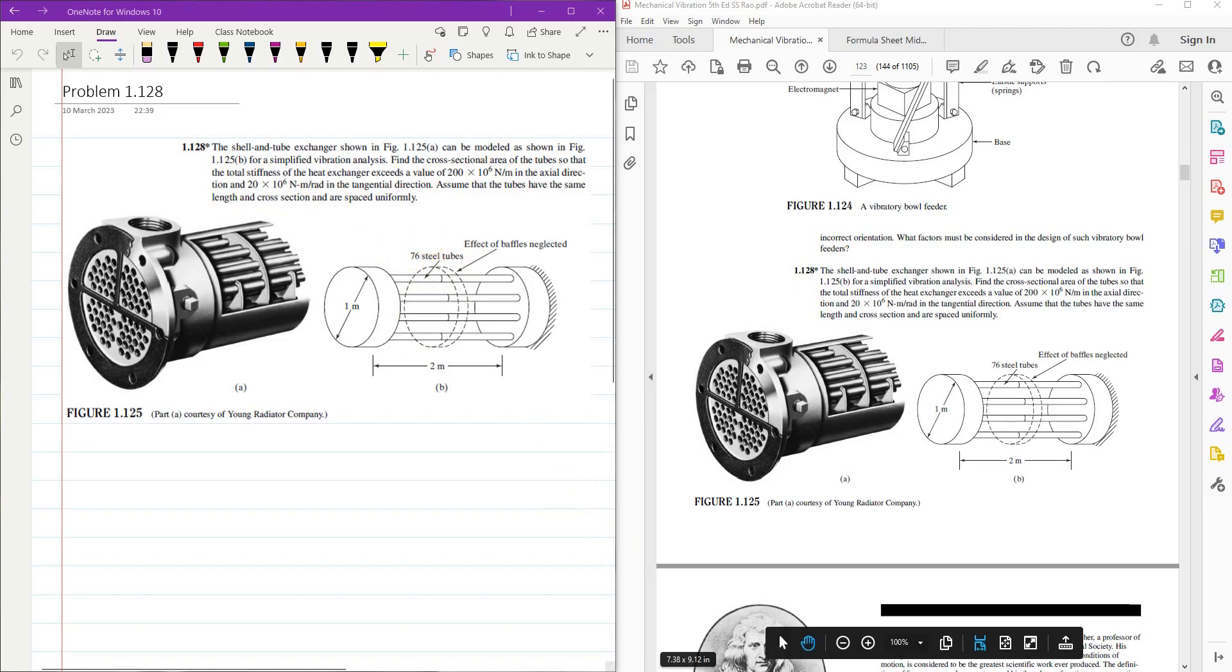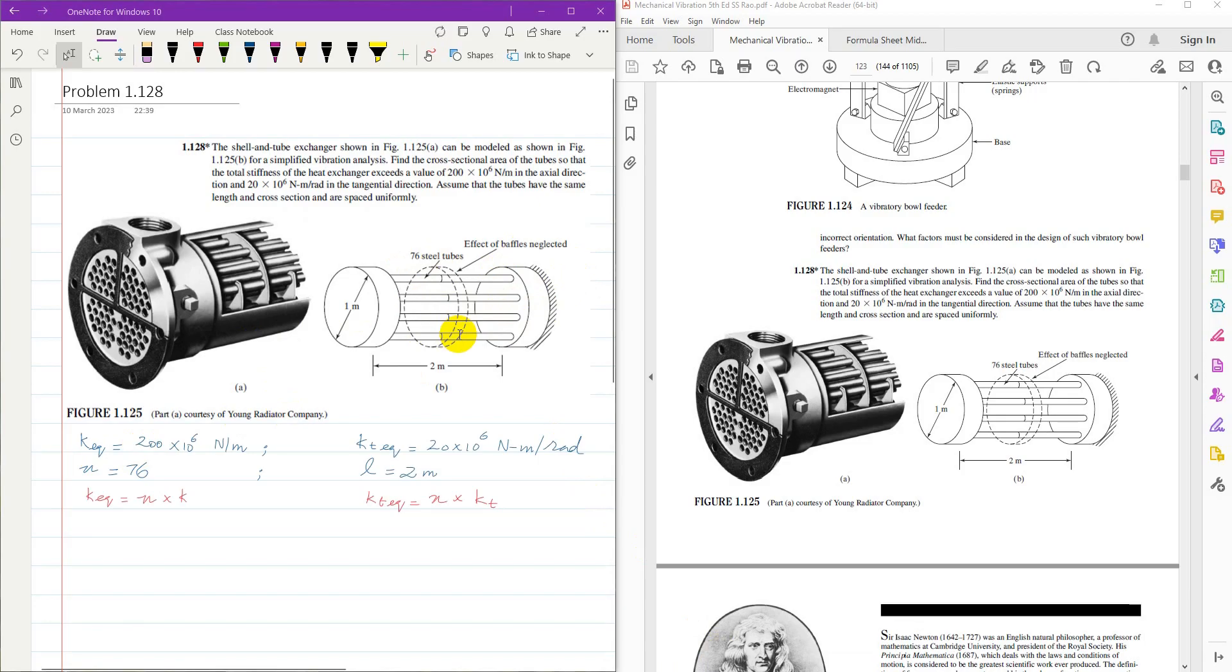So in axial direction, equivalent stiffness of all tubes is 76 tubes, and all these tubes are connected as springs in parallel. When the springs are in parallel we simply add stiffness of each spring. So if n is the number of tubes, then k equivalent is n into k, where k is axial stiffness of each tube. Similarly for tangential direction or torsional stiffness is 20 into 10 to the power 6, and torsional stiffness of each tube is kt equivalent over n which is number of steel tubes.